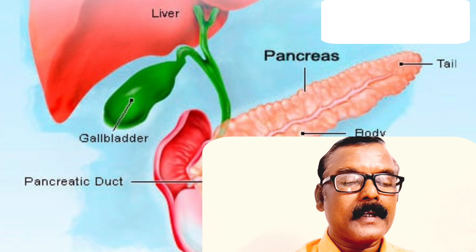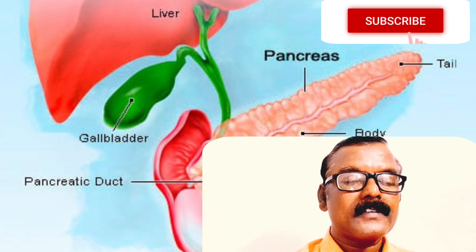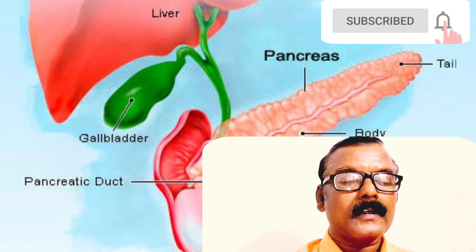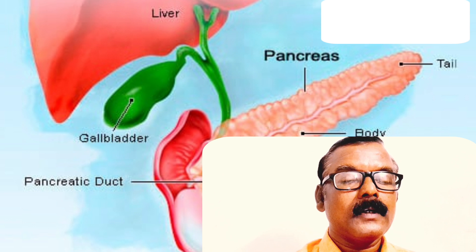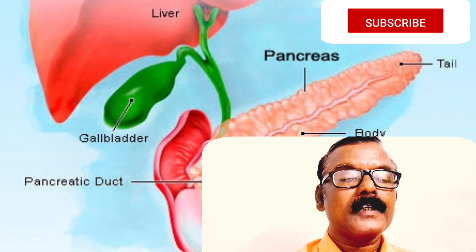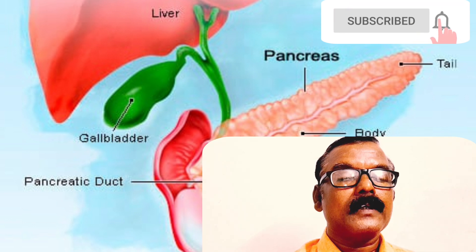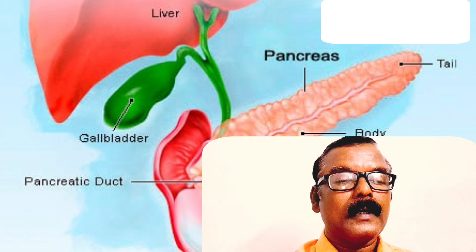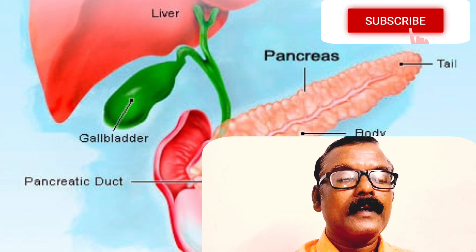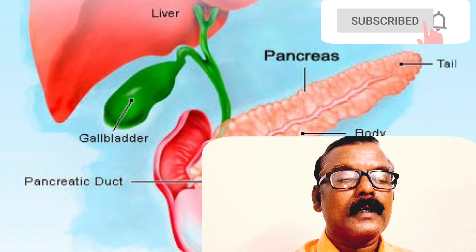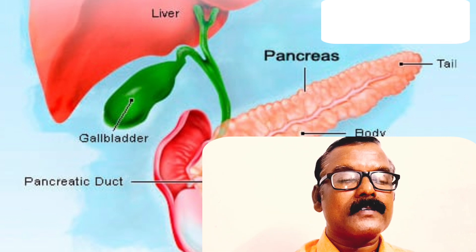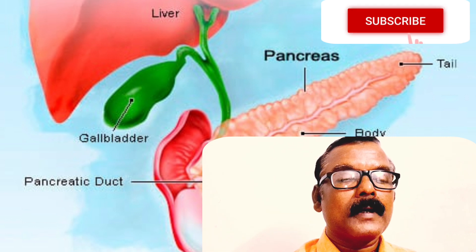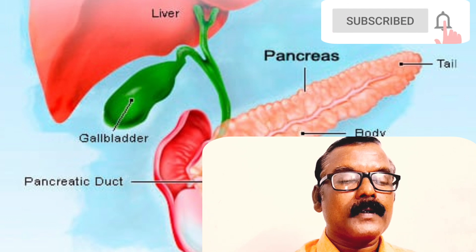The pancreas is a gland organ with a key role in digestion and glucose control. Problems related to the pancreas include diabetes and cancer. A healthful diet can contribute to maintaining a healthy pancreas.